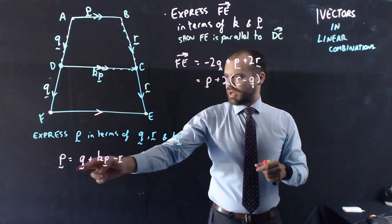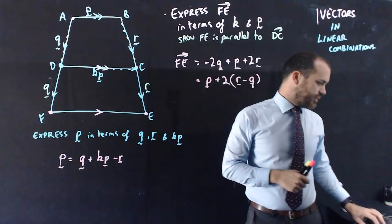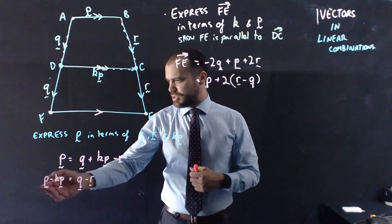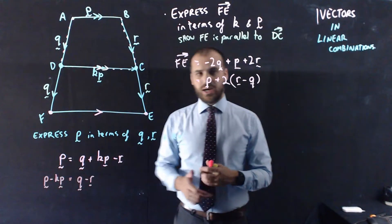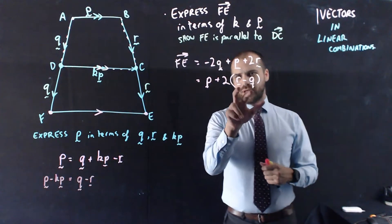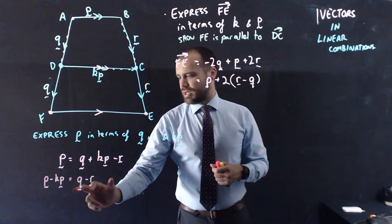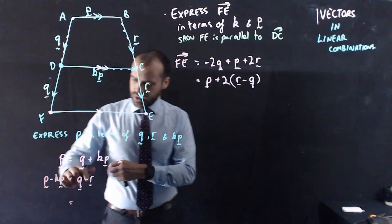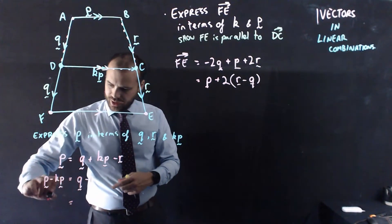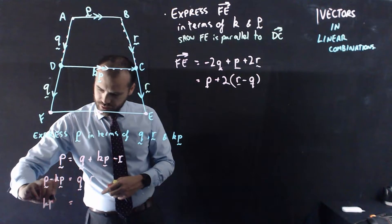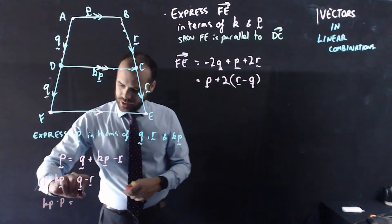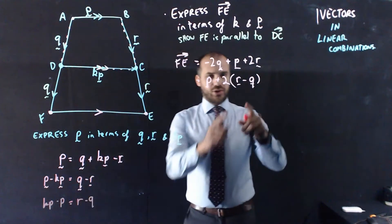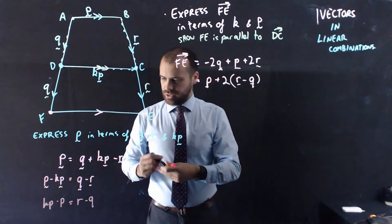I see like a negative R, I see a Q there. Maybe I can rearrange that a little bit. Well, I've gone one step further. I've moved that KP over to this side. So now I've got P minus KP equals Q minus R. I've got R minus Q there. I've got Q minus R there. So it should be pretty trivial to multiply everything by negative 1 and say that KP minus P is equal to R minus Q. Alright, so what have I done? I've got R minus Q. I've got R minus Q. I'll call this equation 1.